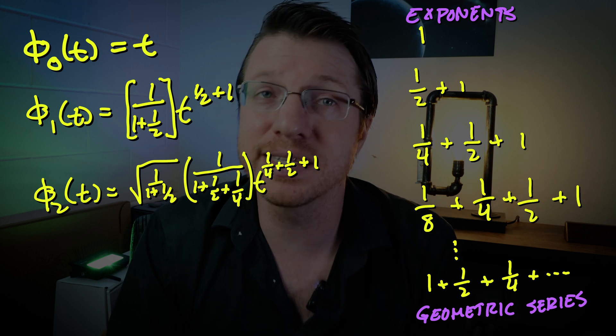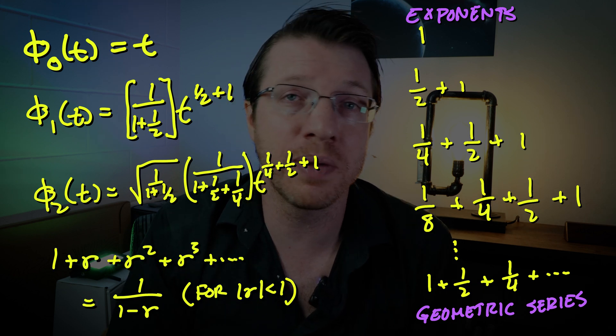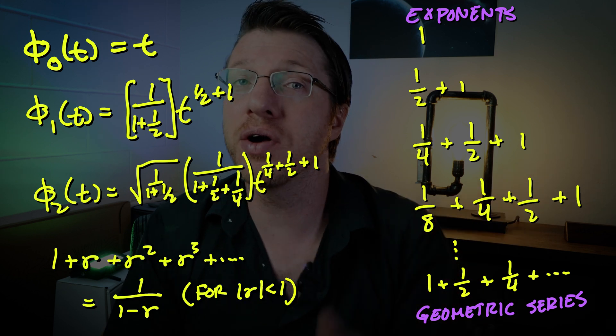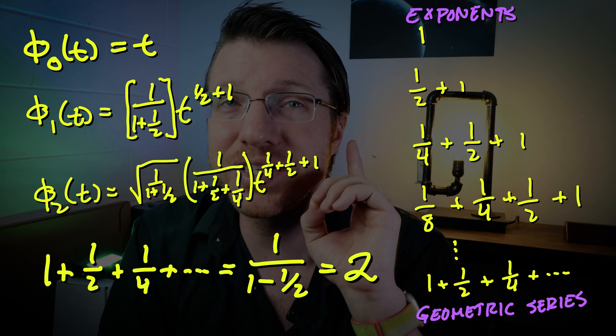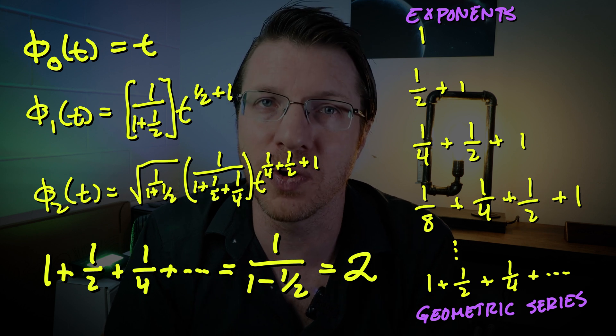What does this sum to? The geometric series formula says that it should sum to 1 over 1 minus r. And here we have r is equal to 1 half. So this sums to 2 and that matches exactly with the exponent of t² over 4.